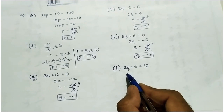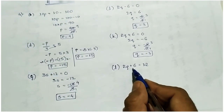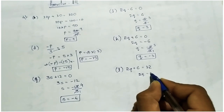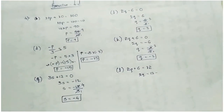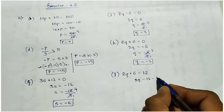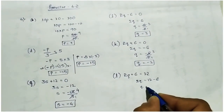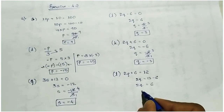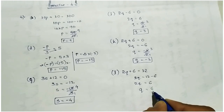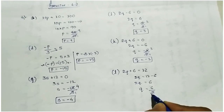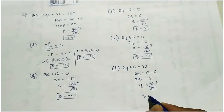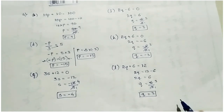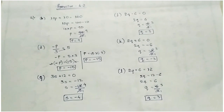In L: 2q plus 6 equal to 12. Take 6 to the right side — it becomes minus — so 2q equal to 12 minus 6, which is 6. Then q equal to 6 by 2. 2 threes are 6, so q equal to 3.